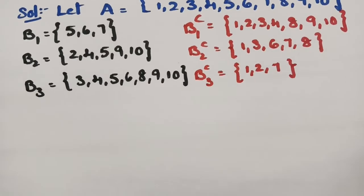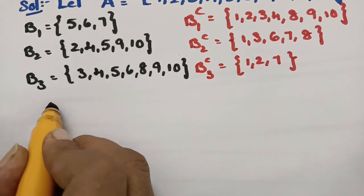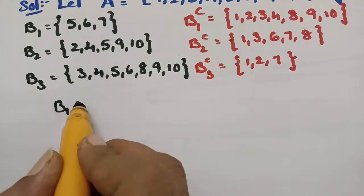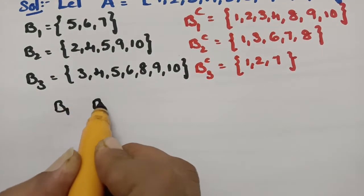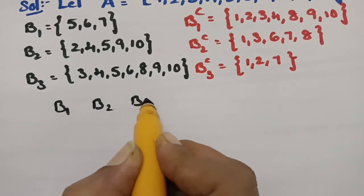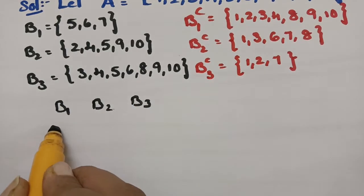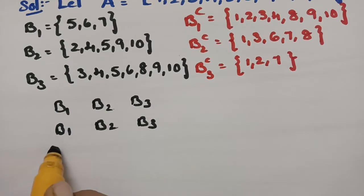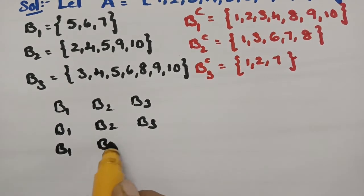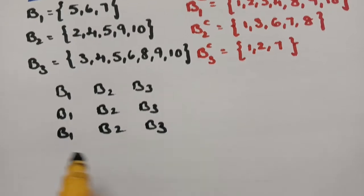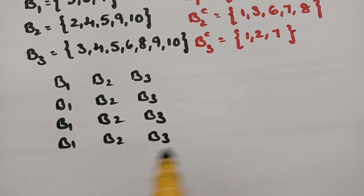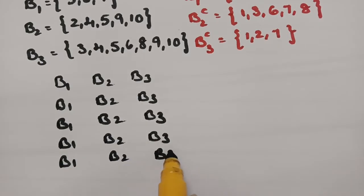How to find the MinSets? First of all, write B1, B2, and B3. Since we need 8 MinSets, we write B1 for 8 times, B2 for 8 times, and B3 for 8 times. So we set up a table with 8 rows, each row containing B1, B2, and B3.